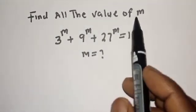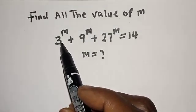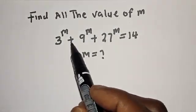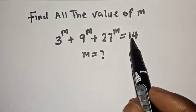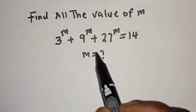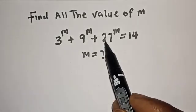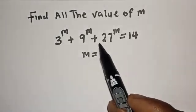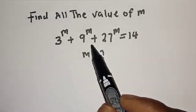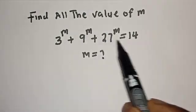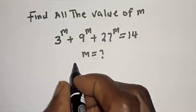Find all the values of m: 3 raised to power m plus 9 raised to power m plus 27 raised to power m is equal to 14. Hi everyone, welcome to my class. In this class we want to find the value of m from this equation. Please don't forget to like, share, comment and subscribe.